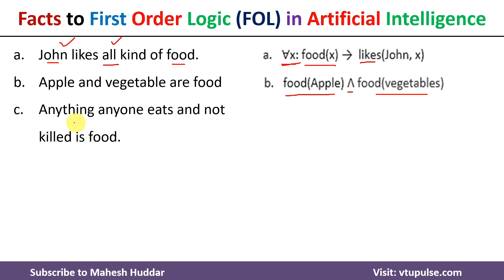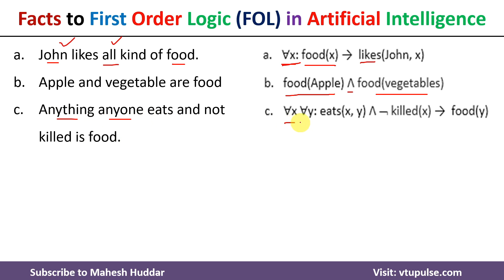The third fact is: anything anyone eats and is not killed is a food. Because 'anything' and 'anyone' are both present, we take 'for all X, for all Y'. If X eats Y and X is not killed, then Y is a food. Conversely, if X eats something and X gets killed, then Y is not a food. That is how we interpret this fact.